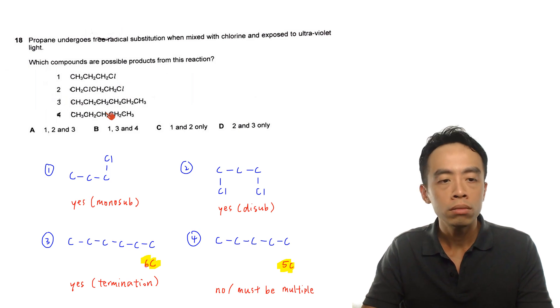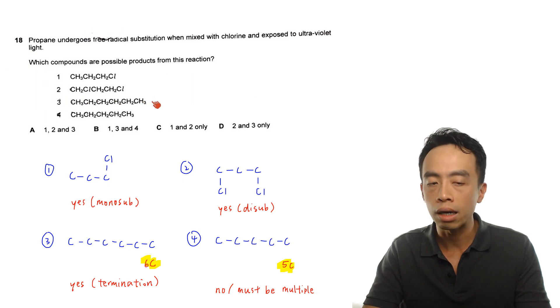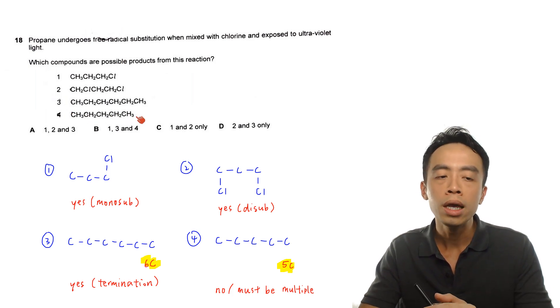Then option three, in this case if I go and count the total number of carbon, this will be 1, 2, 3, 4, 5, 6 carbon, so this would be hexane. Then finally for option four, this is still hydrocarbon or alkane. The number of carbons involved, 1, 2, 3, 4, 5, 5 carbon, so this would be pentane.